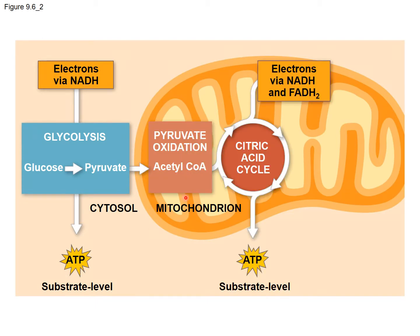Then, if oxygen is present, the pyruvate is going to enter the mitochondria and become oxidized. So pyruvate oxidation is basically an intermediate step in between glycolysis and the citric acid cycle. Once pyruvate is oxidized, it's oxidized to acetyl-CoA, and during this process some carbon dioxide is released.